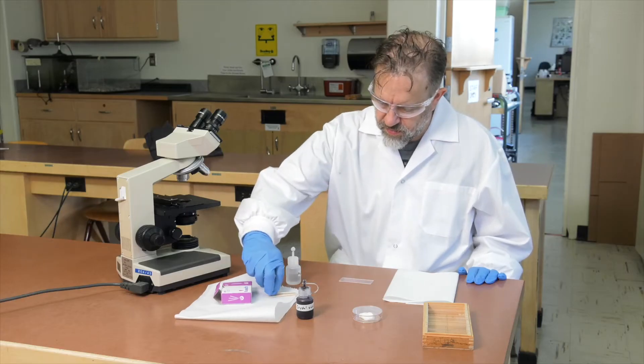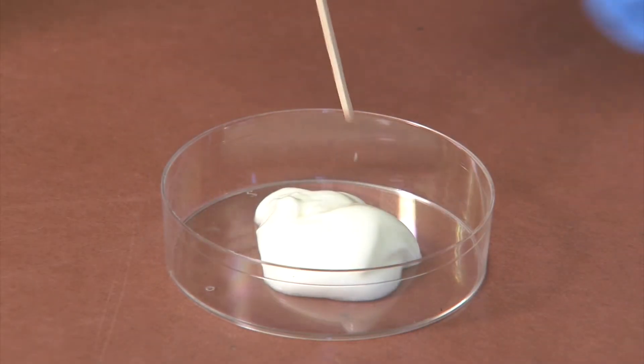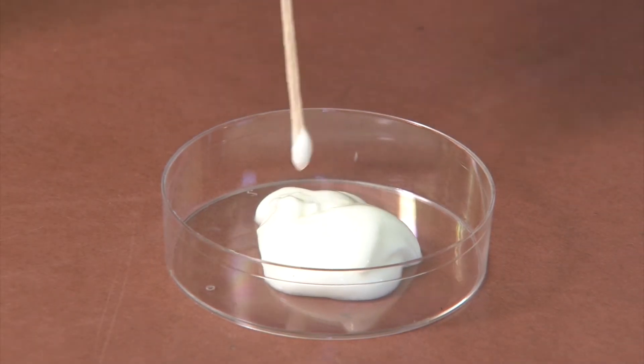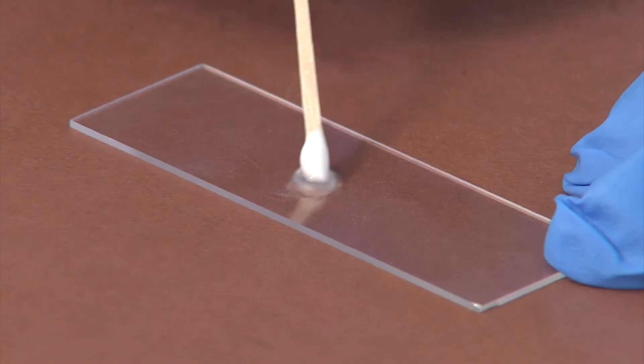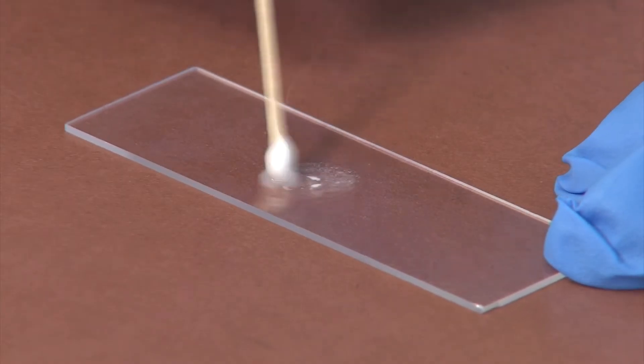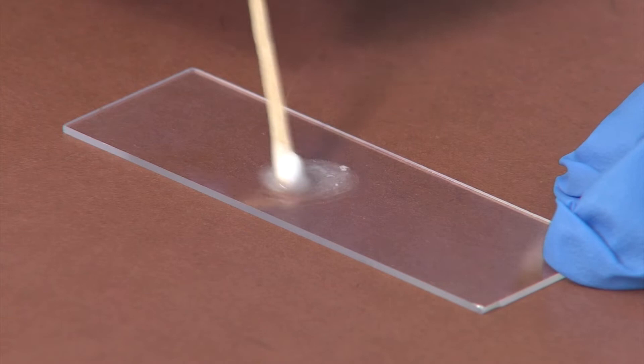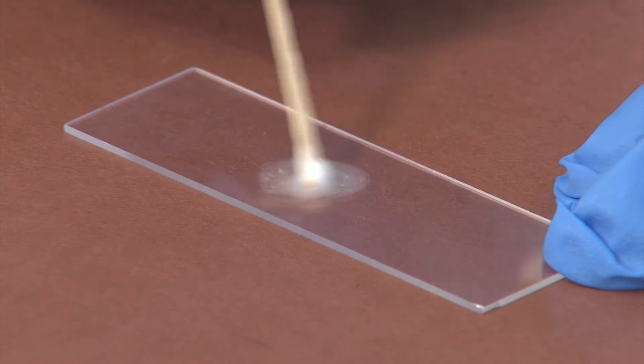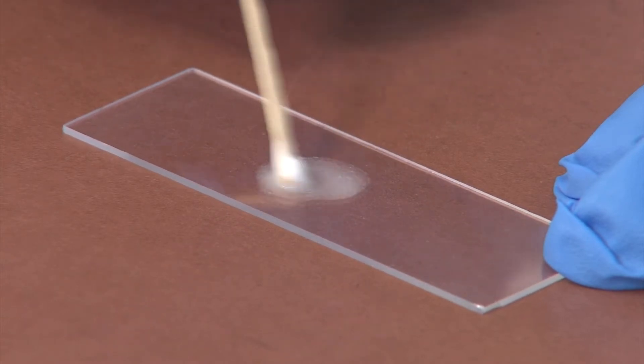Take a toothpick and dip the wider end in the yogurt, then smear a small amount in the middle of the water droplet. You should have a slightly cloudy drop of water. If there is too much yogurt, you may have trouble seeing bacteria.